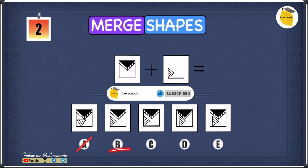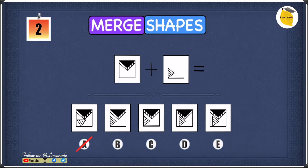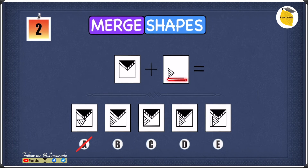Let's move to B. In B, shape 1 has the square, the triangle shaded in black, and the stripy pattern — everything in shape 1 is right. Moving to shape 2, we have the horizontal line, the triangle, and the hatched pattern is in the right direction. B seems to tick all the categories, but let's check the remaining options just to be sure.